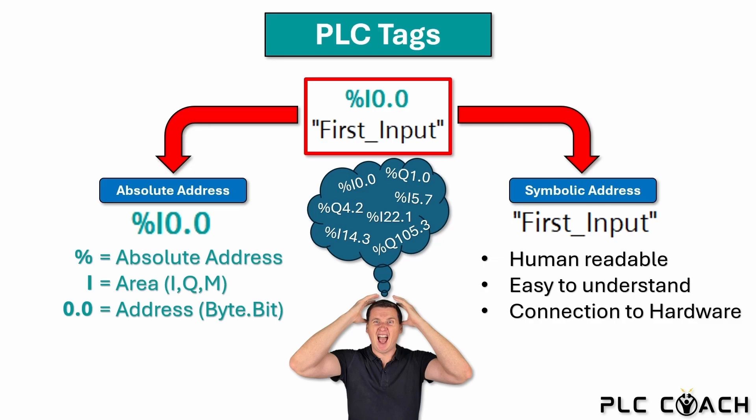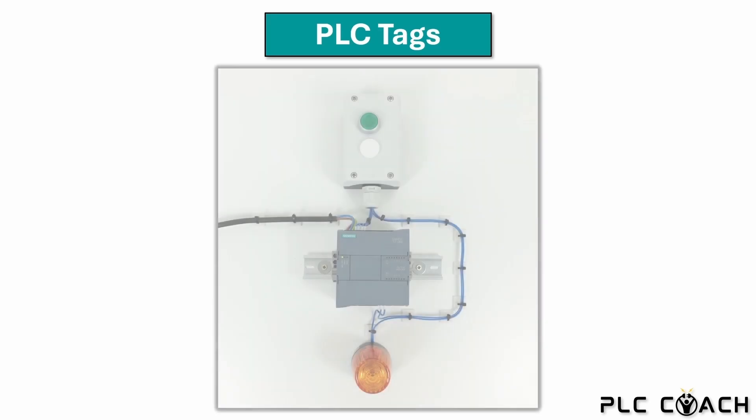If you don't understand this yet, don't worry — it will all become clear when we start working in the TIA portal. For now, our goal is to create a PLC tag for the sensor and the actuator in our training system.